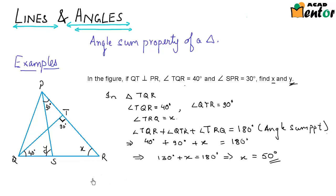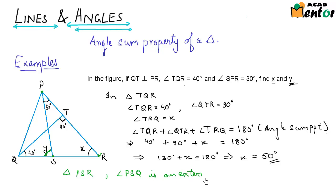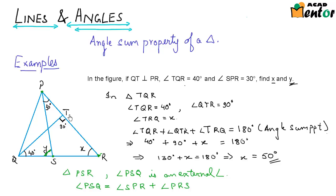Finding y is also very simple. Just consider triangle PSR. If we look at this triangle, we see that SR is being produced to Q and angle y is an external angle. So angle PSQ is an external angle. I know that an external angle measures the sum of the interior opposite angles. That means angle PSQ would be equal to the sum of angle SPR plus angle PRS.